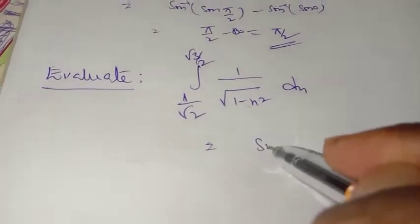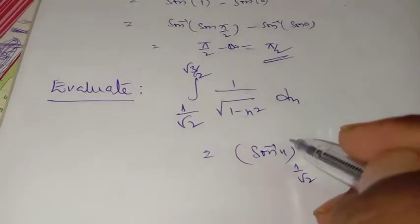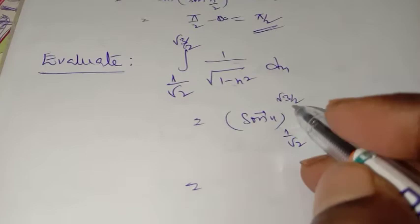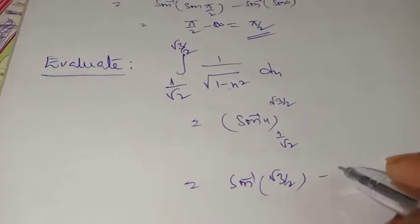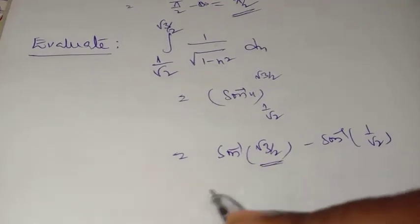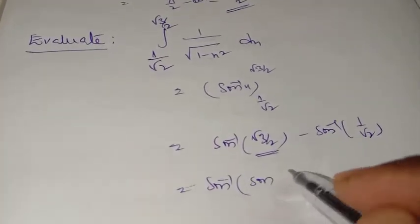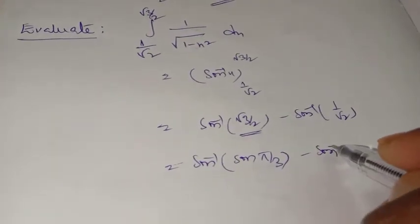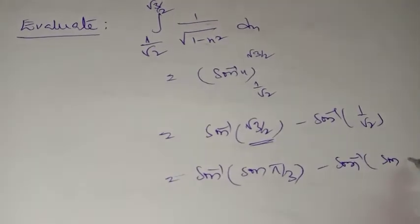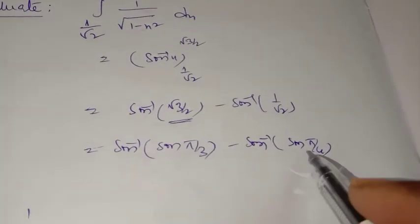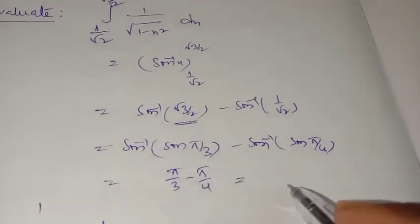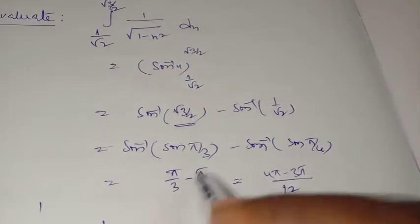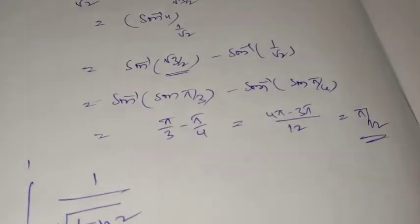Next: same integral with limits changed to 1/√2 to √3/2. We get sin inverse x from 1/√2 to √3/2. Substituting the upper limit: sin inverse of √3/2, which is 60 degrees, that is π/3. Minus sin inverse of 1/√2, which is 45 degrees, that is π/4. Answer: π/3 minus π/4, taking LCM 12, gives 4π minus 3π by 12, equal to π/12.